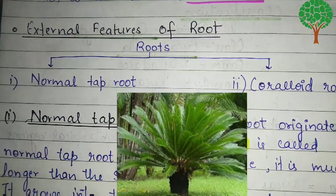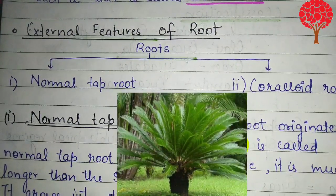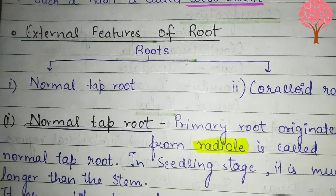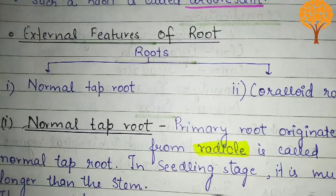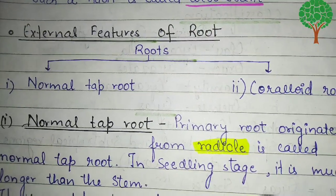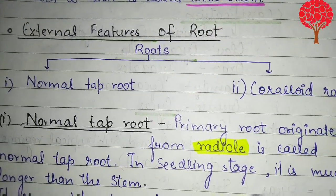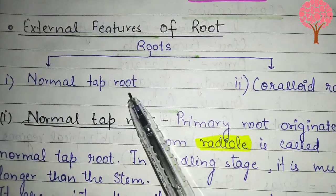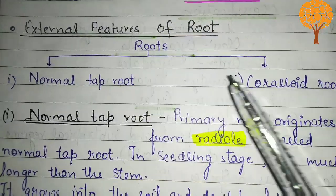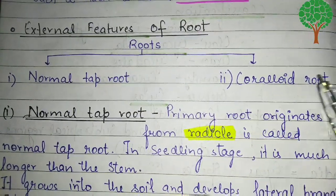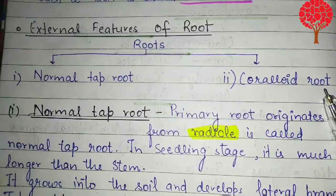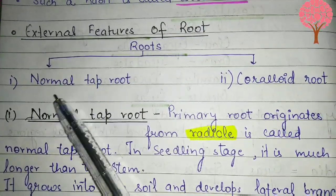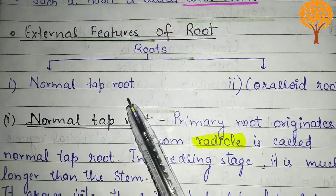Hey friends, in this video we are going to study about the external features of roots of Cycas. In Cycas, two different kinds of roots are there: first of all, the normal tap root, and another one is the coralloid root. In this video we mainly focus on the normal tap root.